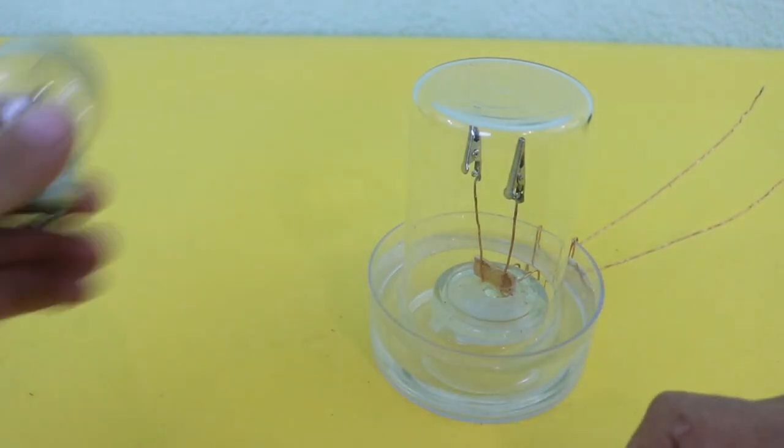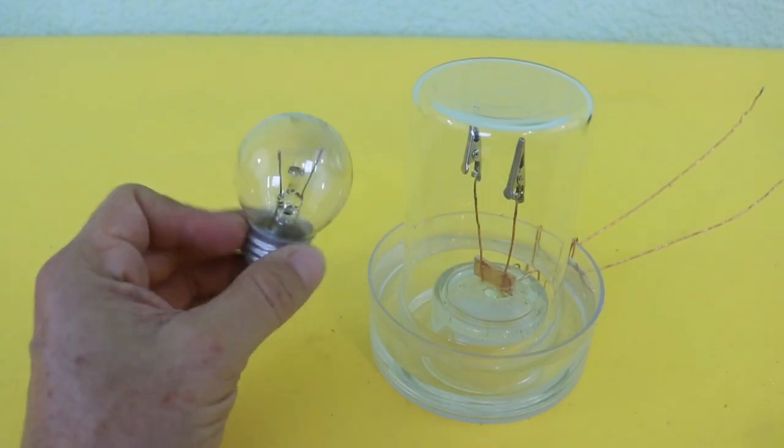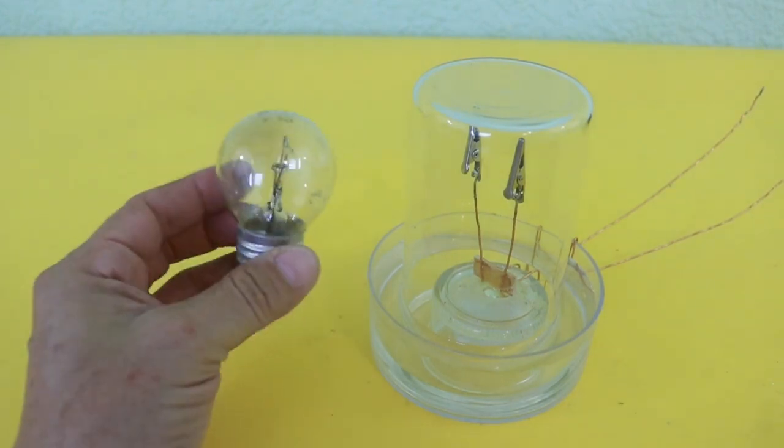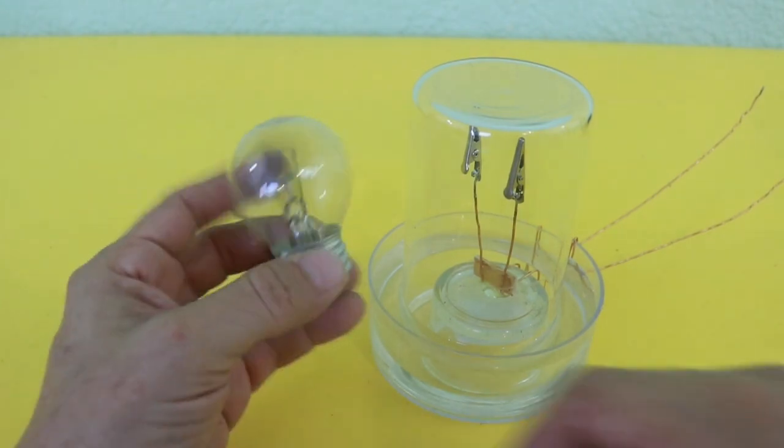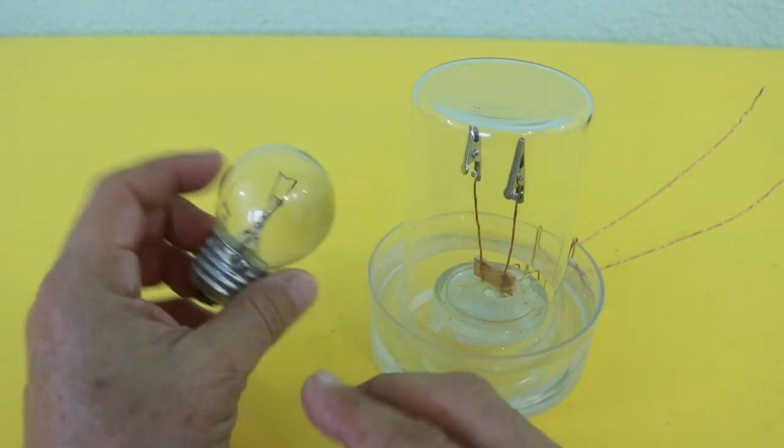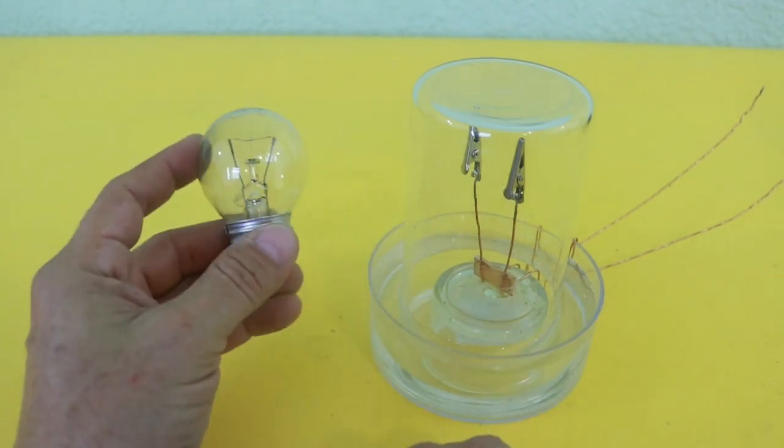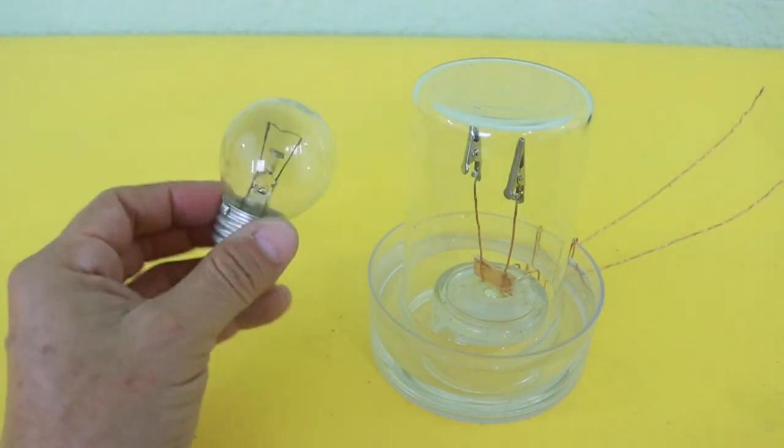As we know, incandescent lamps were the main source for lighting for many years until some 25 or 30 years ago when they were substituted first by fluorescent lighting and more recently by LED lights.